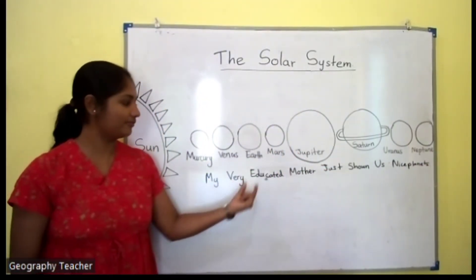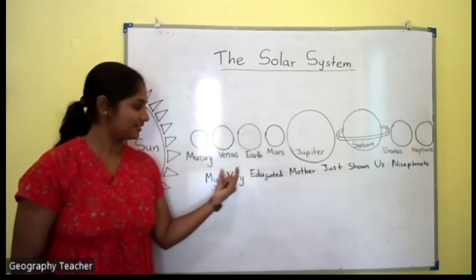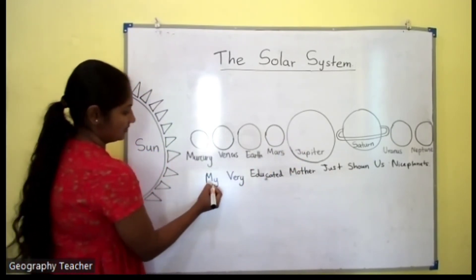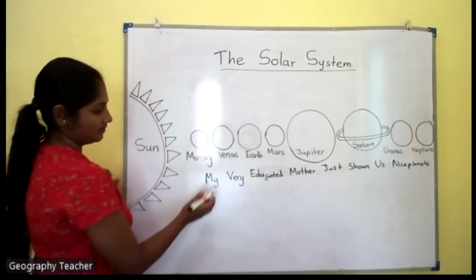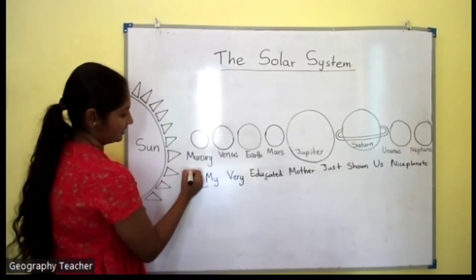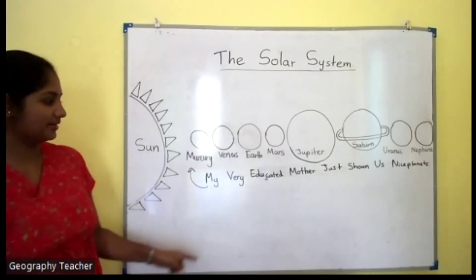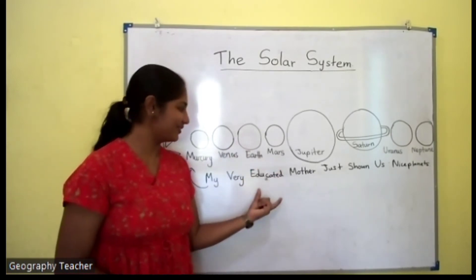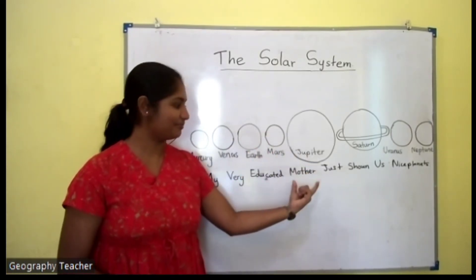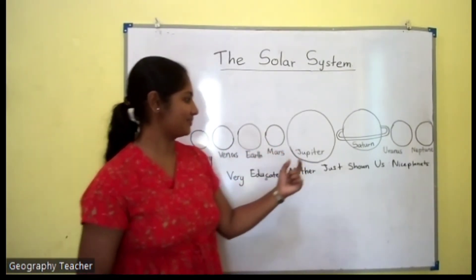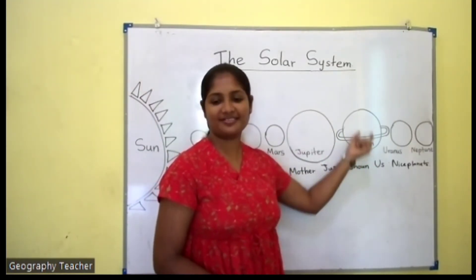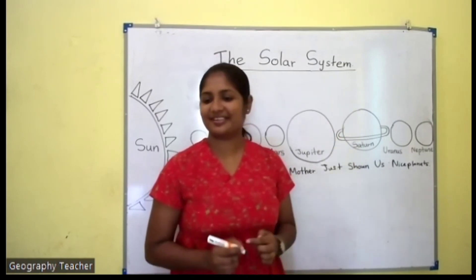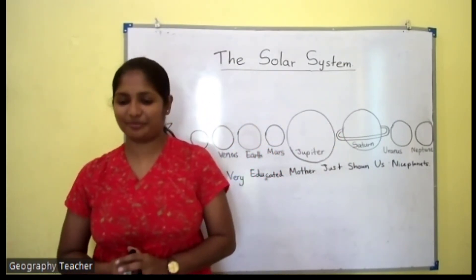Look at the first letter of each word. My represents Mercury. Very - Venus. Educated - Earth. Mother - Mars. Just - Jupiter. Showed - Saturn. Us - Uranus. Neptune. This sentence represents all the planets in our solar system.